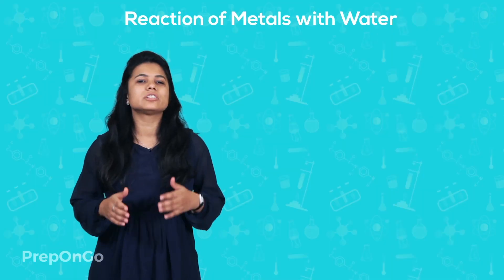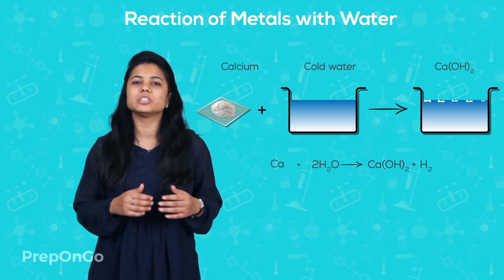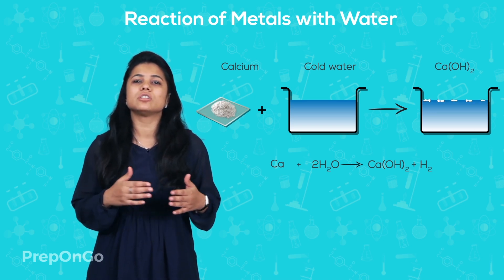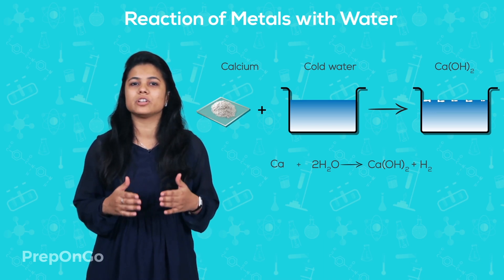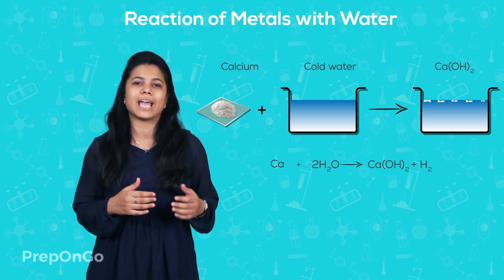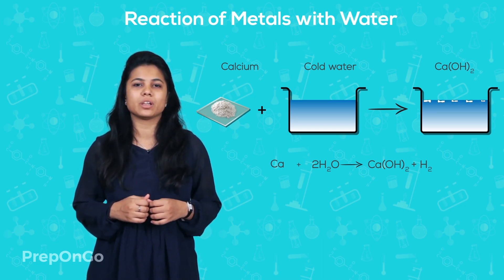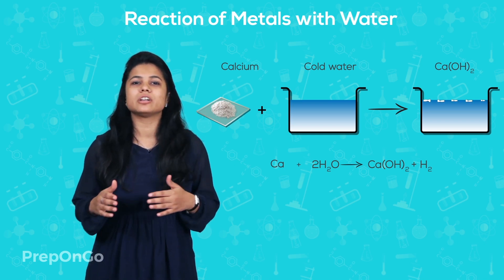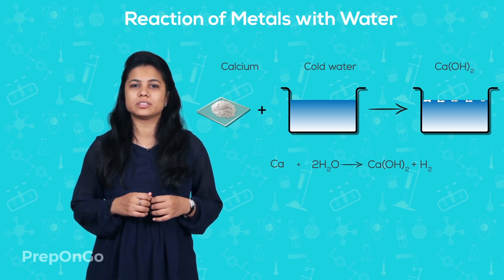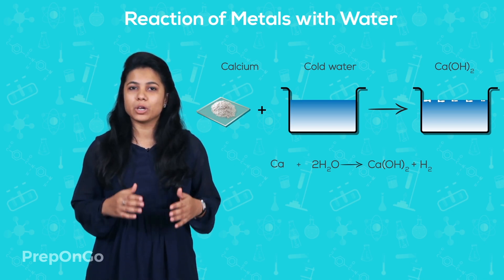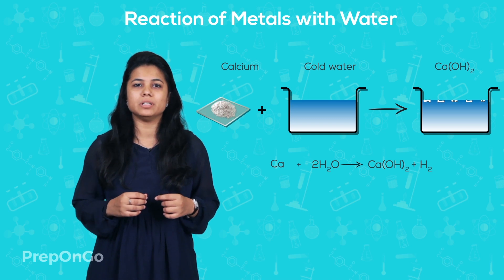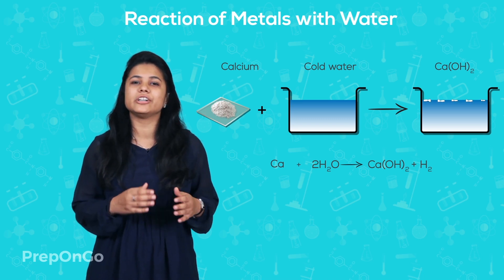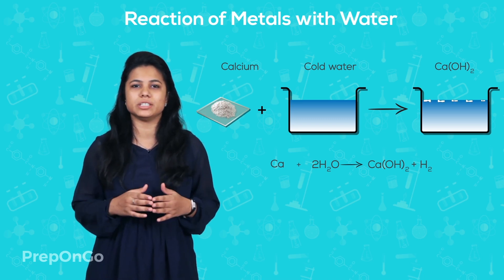The reaction with calcium is not so violent. The heat evolved is not sufficient for the hydrogen to catch fire. Instead, calcium starts to float on the surface because the hydrogen bubbles evolved stick on it and reduce its density.